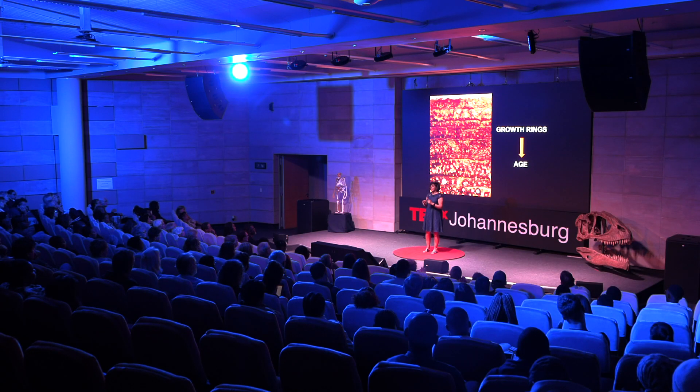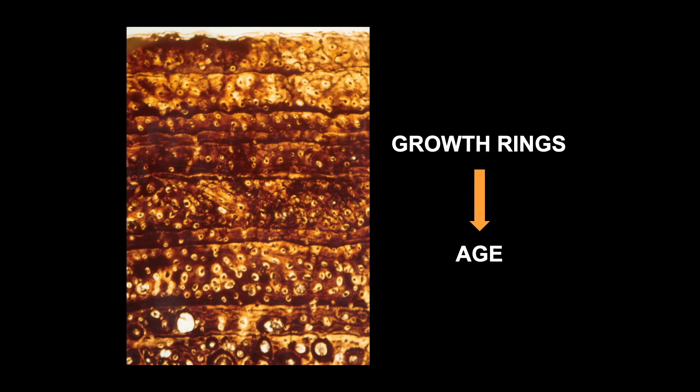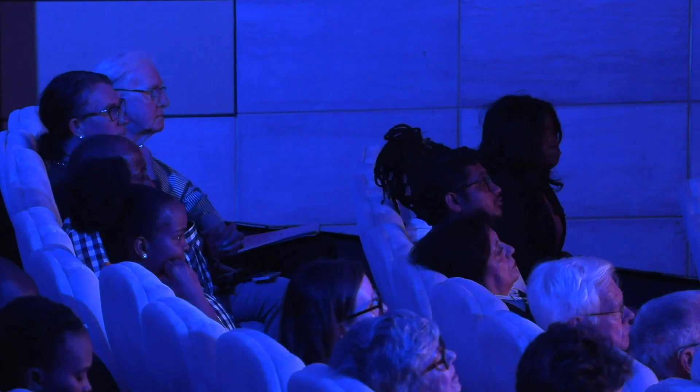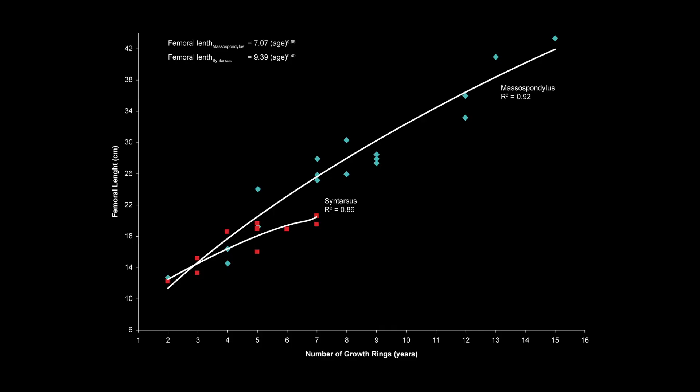When we look at dinosaur bones, in many cases we find that they form bone with growth rings in them. And just like in trees, you can count the number of rings and get the age of the animal. Years ago, when I was a PhD student, I worked on two Southern African dinosaurs, looked at many different-sized individuals, counted the growth rings in their bones, and developed the very first growth curves of dinosaurs in the world.